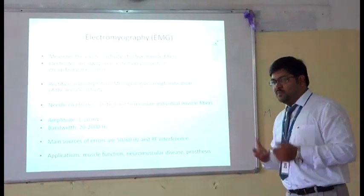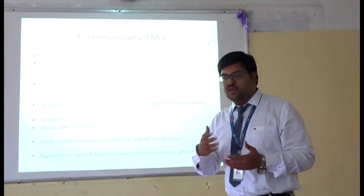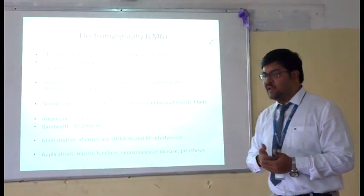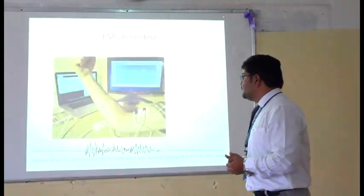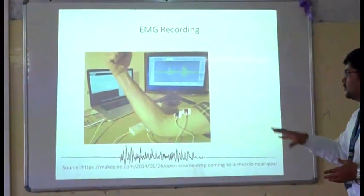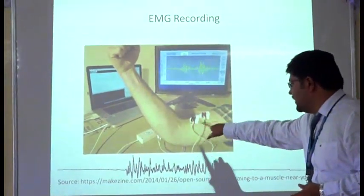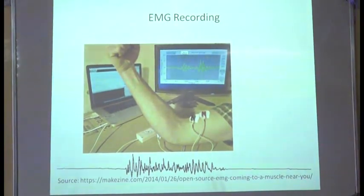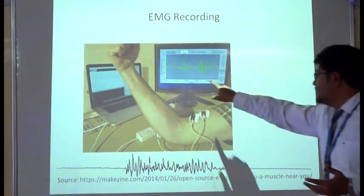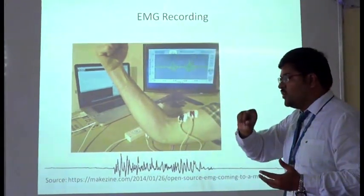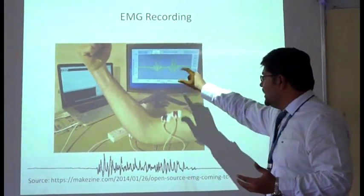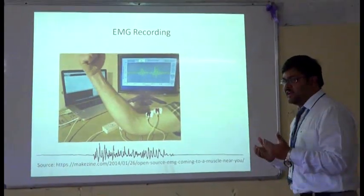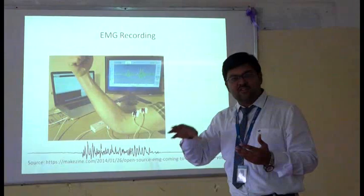EMG is also used in prosthesis evaluation — to determine whether an implanted prosthesis is appropriate for the patient. Unlike ECG, which is a periodic signal, EMG is aperiodic and random, meaning it does not have a particular repeating wave pattern. To study EMG, we analyze the frequency and amplitude of the signal to determine whether it is normal or abnormal.